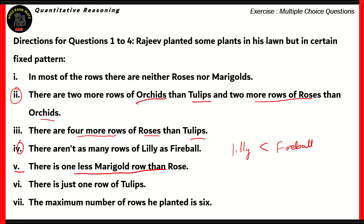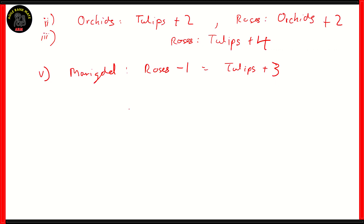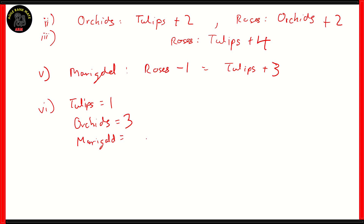If you look at clue number six, there's just one row of tulips, so the number of rows of tulips is one. This is why we've been converting all the other flowers to tulips — because according to clue six, there's only one row of tulips. So according to clue six, if the number of tulips is one, then the number of orchids would be one plus two, that's three. The number of marigolds will be one plus three, that's four. And the number of roses will be one plus four, which is five.